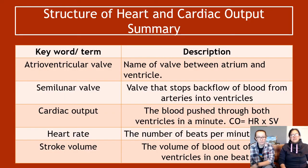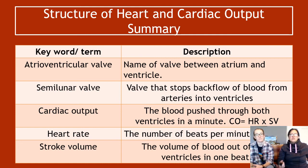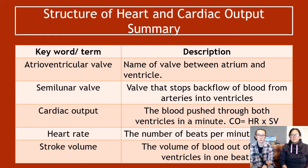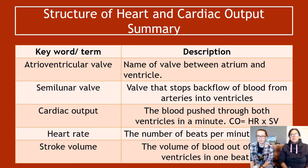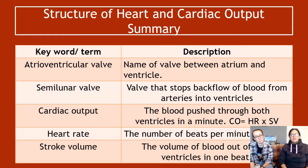To summarise: the atrioventricular (AV) valve sits between the atrium and ventricle and stops backflow of blood between them. The semilunar (SL) valve stops backflow of blood from the arteries into the ventricles. Cardiac output is the blood pushed through both ventricles per minute, calculated as heart rate × stroke volume. Heart rate is the number of beats per minute, and stroke volume is the volume of blood out of both ventricles per beat.